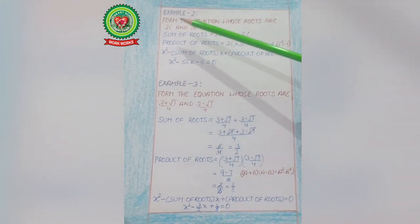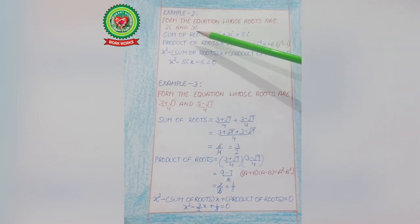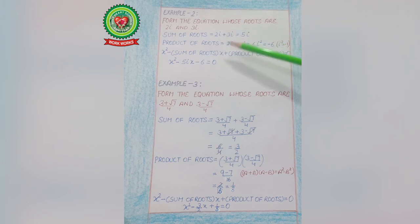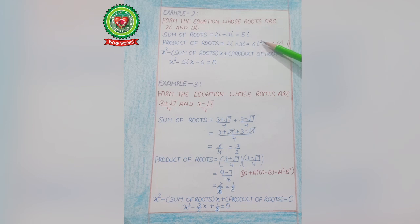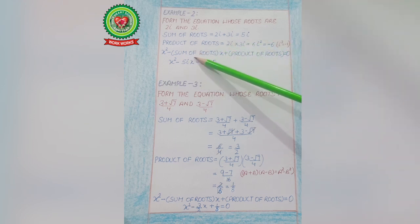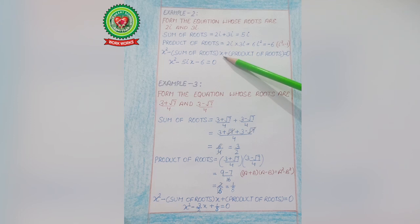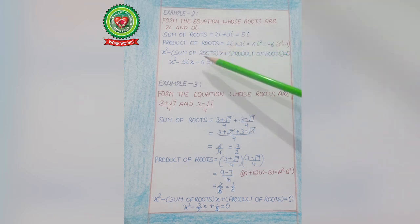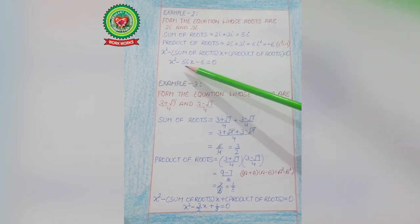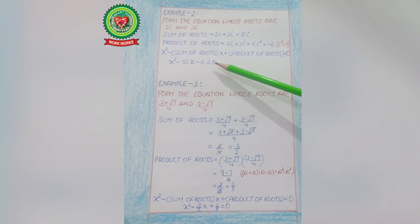Some more examples related to Type 2 — when Roots are in the form of complex numbers: 2i and 3i. The first step is the same. Sum of Roots: 2i + 3i = 5i. Product of Roots: 2i × 3i = 6i². We know that i² = −1, so the product is −6. The equation is x² − (Sum of Roots)x + (Product of Roots) = 0. Filling in values: the required equation is x² − 5ix − 6 = 0.